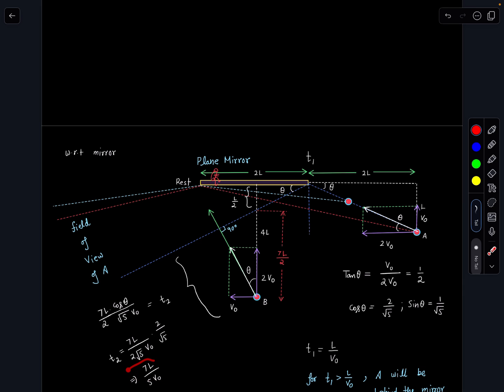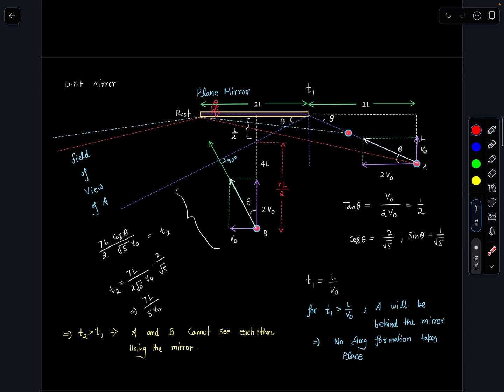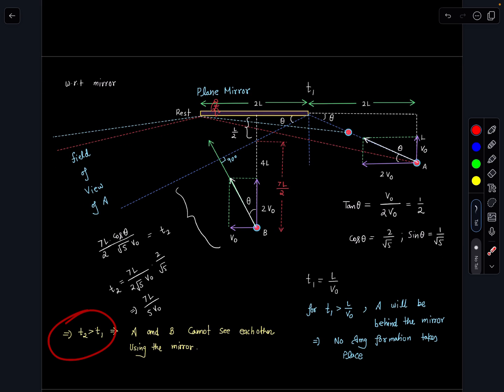Many students reported this answer, but remember this situation is not physically possible because by that time person A will be behind the mirror. This time is greater than L by V₀. Since T2 is greater than T1, A and B cannot see each other using the mirror. So that is the right solution for this problem. Now the next modification which I have done in this: